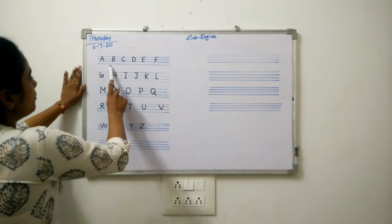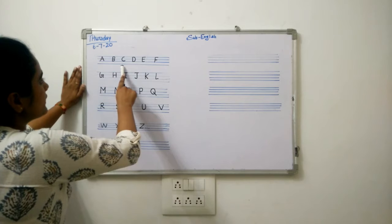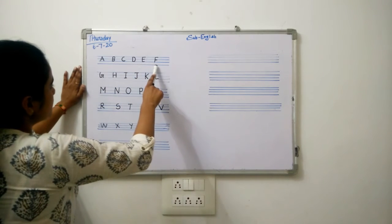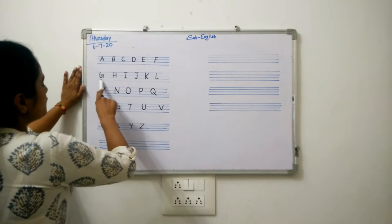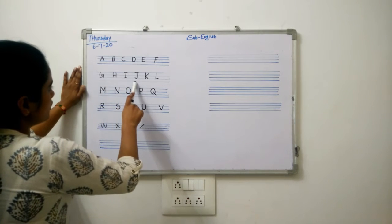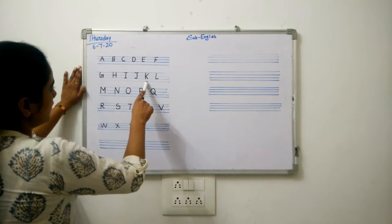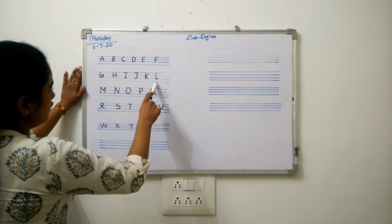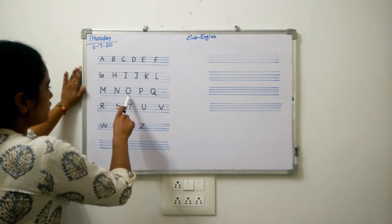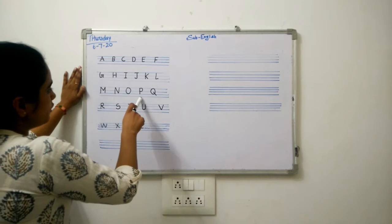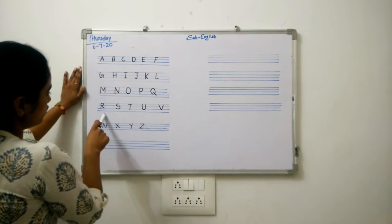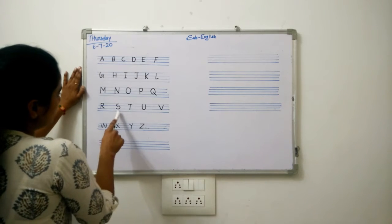A for apple, B for ball, C for cat, D for dog, E for elephant, F for fish, G for girl, H for hen, I for ice cream, J for jug, K for kite, L for lion, M for monkey, N for nest, O for orange, P for parrot, Q for queen, R for rose, S for sun.